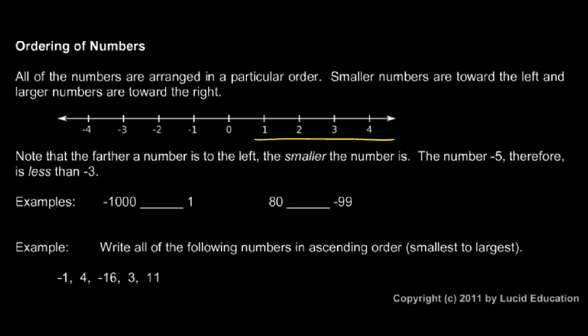And you can see that especially easily with the positive numbers. One is clearly less than two and one is to the left of two, and two is less than three and two is to the left of three, and so on. The farther a number is to the left, the smaller it is.